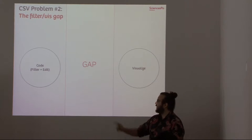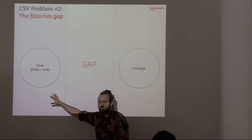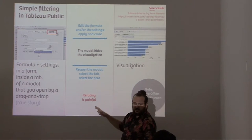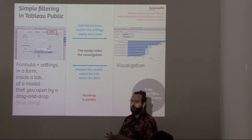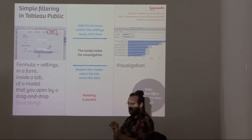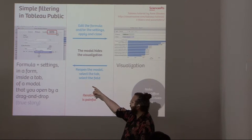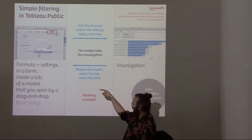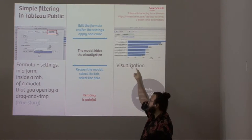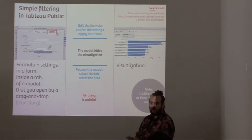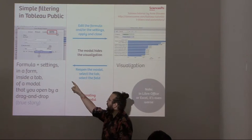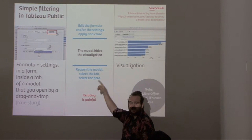There's a gap between the coding — filtering and editing the CSV — and visualizing it. Inside Tableau Public, the software is amazing if you want to craft complex, sophisticated visualizations and you really know what you want. But if you just want to filter your simple CSV to look at a specific facet, you have to open a modal by drag and drop, go to a tab, and paste your formula in a form. Each time you want to do it again it's very complicated. The panel is hiding the visualization, so you have many steps to open it, edit your filter, and go back to visualization. Iterations are painful as well.